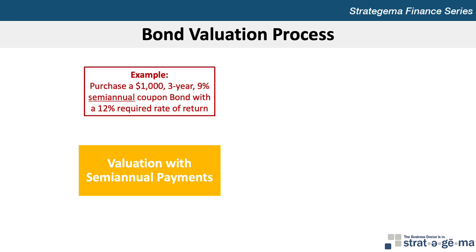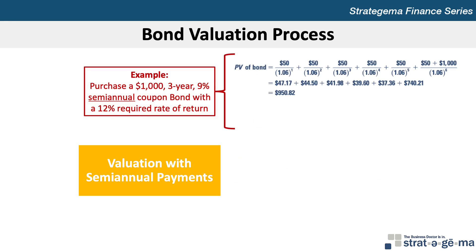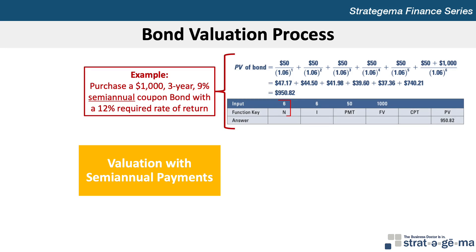With these adjustments made to our original example, with the bond now being semi-annual, the present value of the bond is $950.82. Note that N is now 6, I is 6, and the coupon payment PMT is 50.